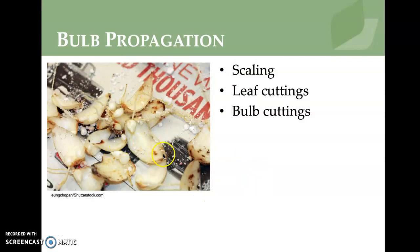Bulbs can also be propagated by scaling them. Leaf cuttings are another method — for narcissus, scales are placed in rooting medium and increase in size over time.